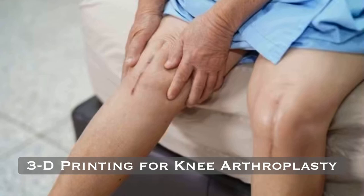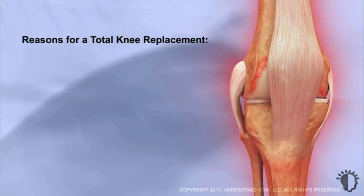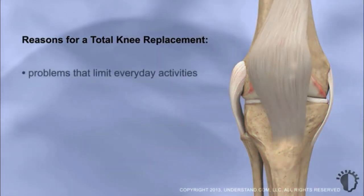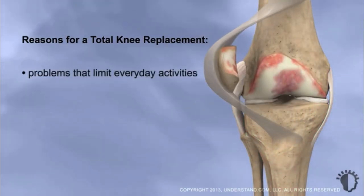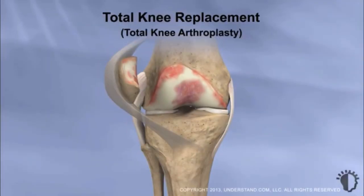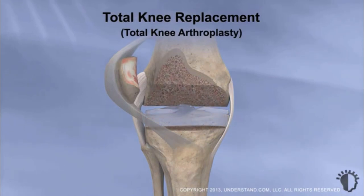Knee arthroplasty is the third most common medical implant surgery in the world, with over 600,000 procedures performed annually in the US alone. For the majority of these patients, osteoarthritis is the principal cause. This disease causes cartilage around the knee to degrade and results in the femoral and tibial heads rubbing off one another.